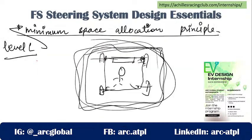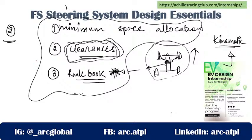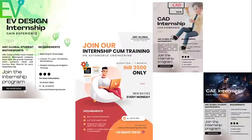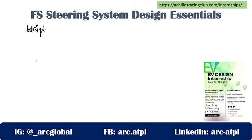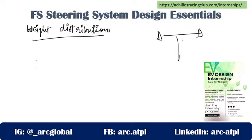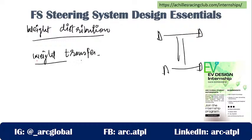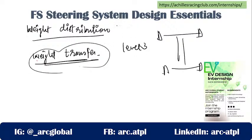Now bring all these systems together and arrange them with the least possible space allocated. After doing so - this is the first step of design. Then you need to look up into weight distribution: how much weight is at the front, how much at the rear. After that, look into weight transfer. That is Level 2. Level 1 is just the kinematic model.